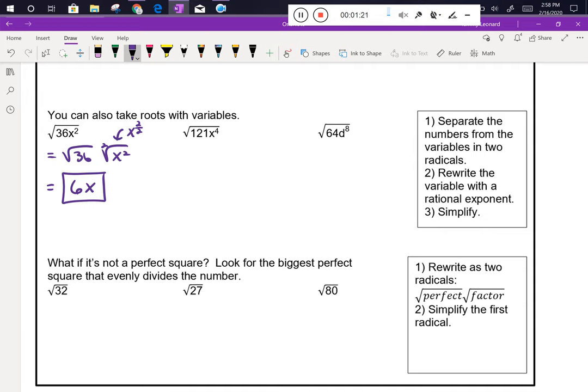We have the square root of 121x to the fourth, so that's the square root of 121 times the square root of x to the fourth. Well, we know that the square root of 121 is 11. When we look at this square root of x to the fourth, that's x to the 4 over 2. Since 4 divided by 2 is 2, this is going to be x squared.